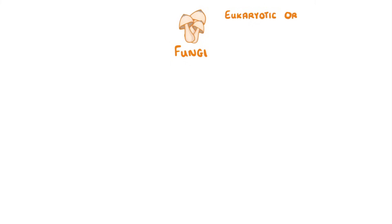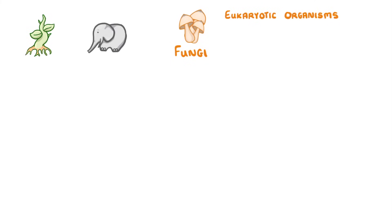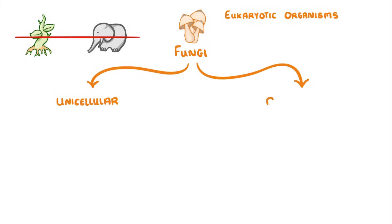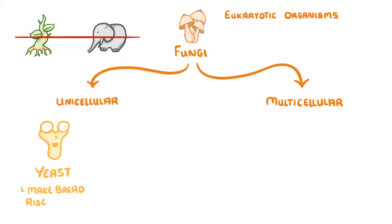Fungi are eukaryotic organisms just like plants and animals, but unlike plants and animals, fungi can be either unicellular or multicellular. For example, yeast is a unicellular fungi that we use to make bread, while mushrooms are multicellular fungi.